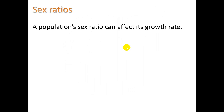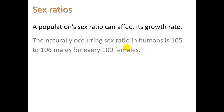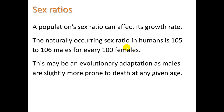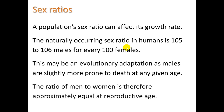Sex ratios. A population sex ratio can affect its growth rate. The naturally occurring sex ratio in humans is 105 to 106 males for every 100 females. Why more males? This may be an evolutionary adaptation, as males are slightly more prone to death at any given age. The ratio of men to women is therefore approximately equal at reproductive age, which is what you would want for the most successful reproduction.